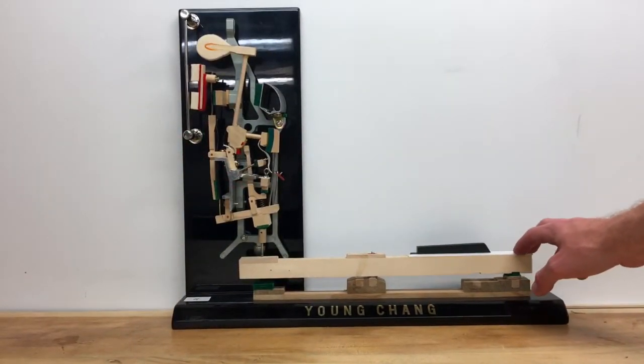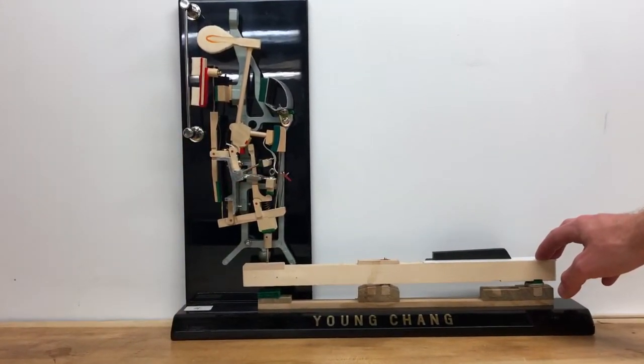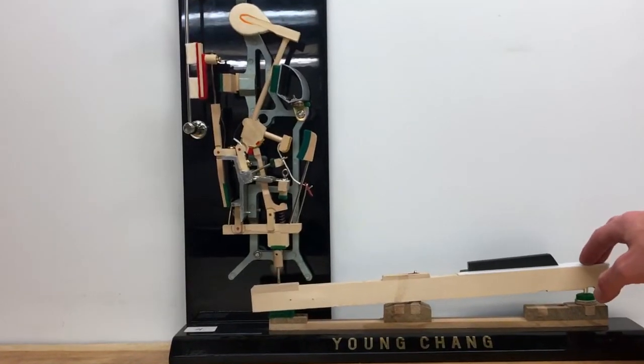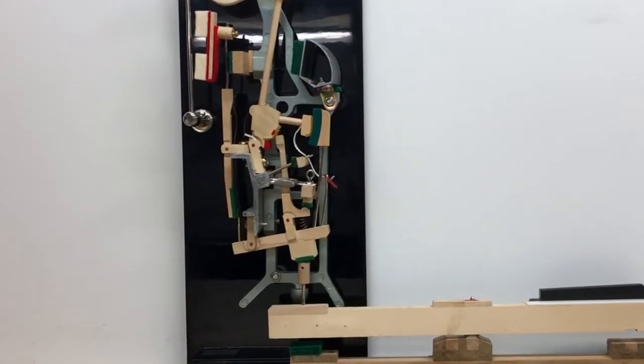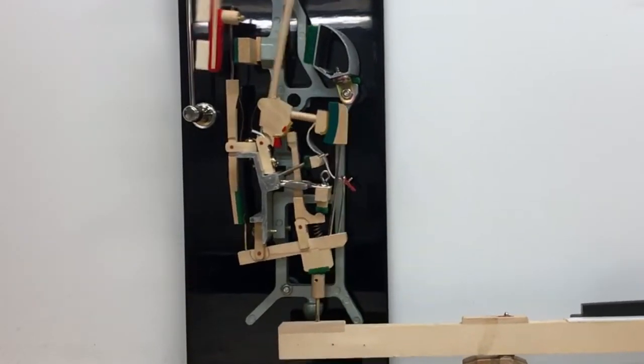When the key is fully depressed and the hammer has rebounded, the back check on the whippen contacts the catcher on the hammer butt and holds the hammer in check, preventing it from bouncing and re-striking the string.